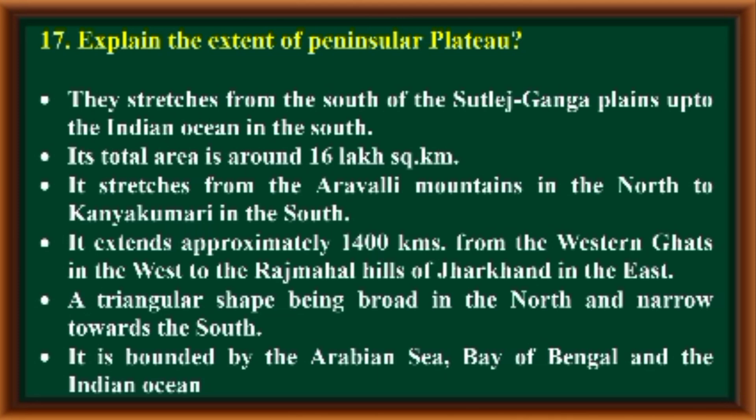It extends approximately 1,400 kilometers from the Western Ghats in the west to the Rajmahal Hills of Jharkhand in the east. It is triangular in shape, being broad in the north and narrow towards the south. It is bounded by the Arabian Sea, the Bay of Bengal, and the Indian Ocean.